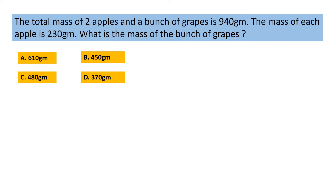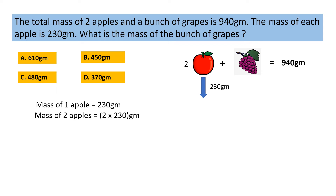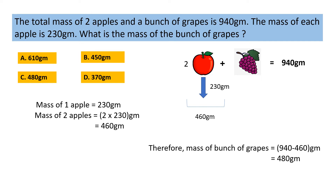The total mass of 2 apples and a bunch of grapes is 940 g, meaning 2 apples plus a bunch of grapes equals 940 g. The mass of each apple is 230 g, and we have 2 apples, so the mass of 2 apples is 2 into 230 g, which equals 460 g. Therefore, the mass of the bunch of grapes is 940 g minus 460 g, which equals 480 g. The correct option is C, 480 g.